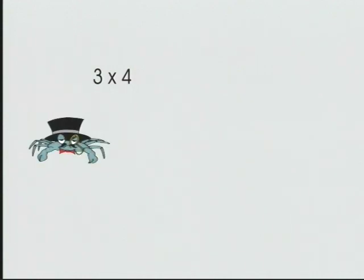Multiplication builds arrays. The multipliers will define the dimensions of a rectangle. Three times four means we'll be building a rectangle that is three by four.